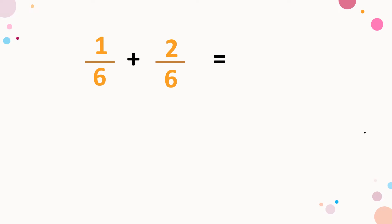Here's another example: one over six plus two over six. One plus two, that is equal to three. And copy the common denominator, six. But three over six is not yet in lowest term. So what we are going to do to reduce this to lowest term is to find the greatest common factor of three and six.